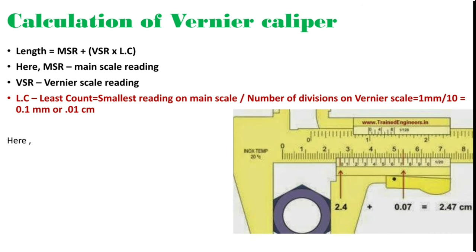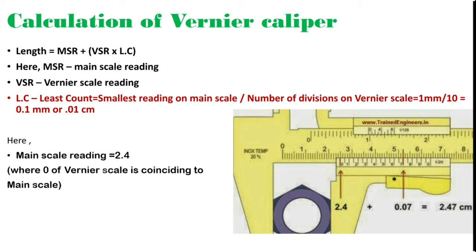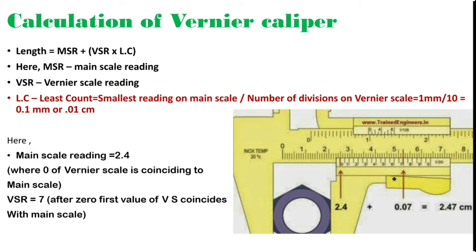This is a sample question — we will see what is the reading of this object, what is the diameter of this object in this caliper. The main scale reading is 2.4. How do we take main scale reading? We have to see where the 0 of vernier scale is coinciding with the main scale — here it is 2.4. Then VSR (vernier scale reading) is equal to 7. We have to see which is the first number of vernier scale that coincides with the main scale after 0 — here it is 7. So, 7 into least count equals 0.07. The value will be 2.4 plus 7 × 0.01, which is equal to 2.47 centimeters.